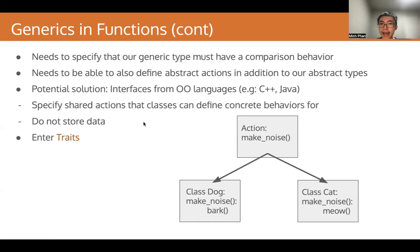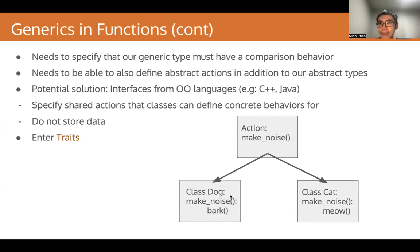Interfaces specify shared actions that classes can define concrete behaviors for, and they do not store data. Here is a diagram illustrating this example. We have an action makeNoise, and we have two classes: Dog and Cat. The Dog class can choose to define makeNoise as barking, whereas the Cat class may define it as meowing. So how do we achieve such a thing in Rust?